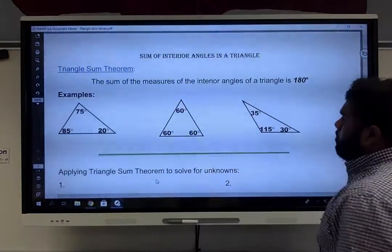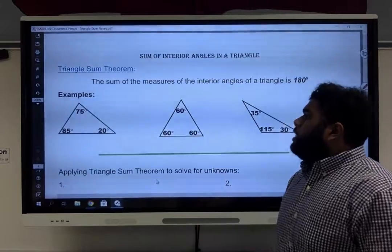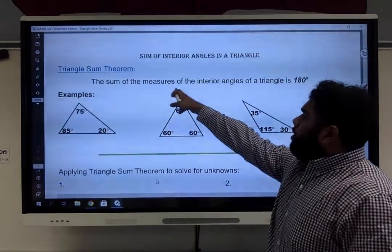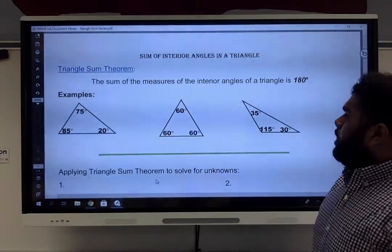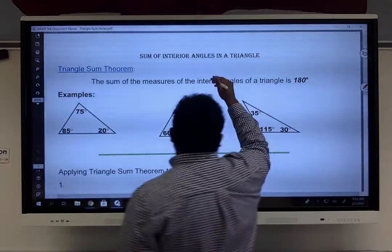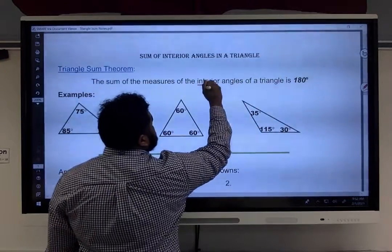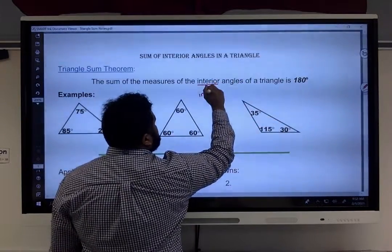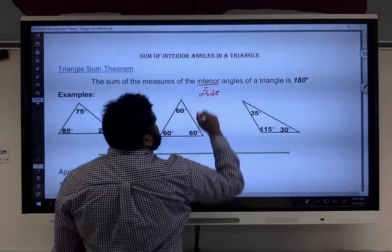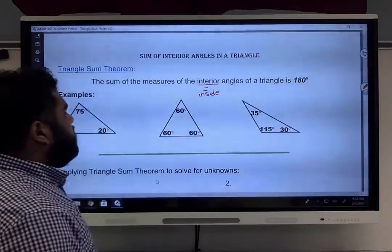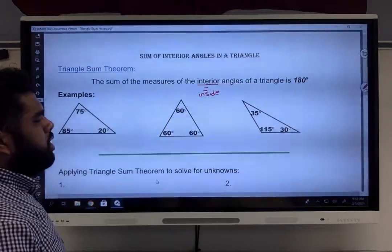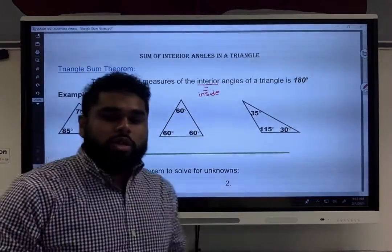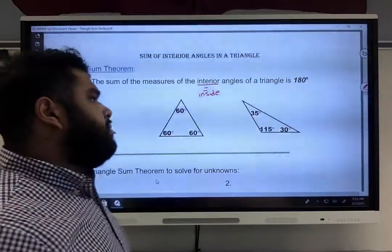What the triangle sum theorem says is that the sum of the measures of the interior angles, remember interior, inside. The measurements of the angles inside of a triangle are always going to equal 180 degrees.